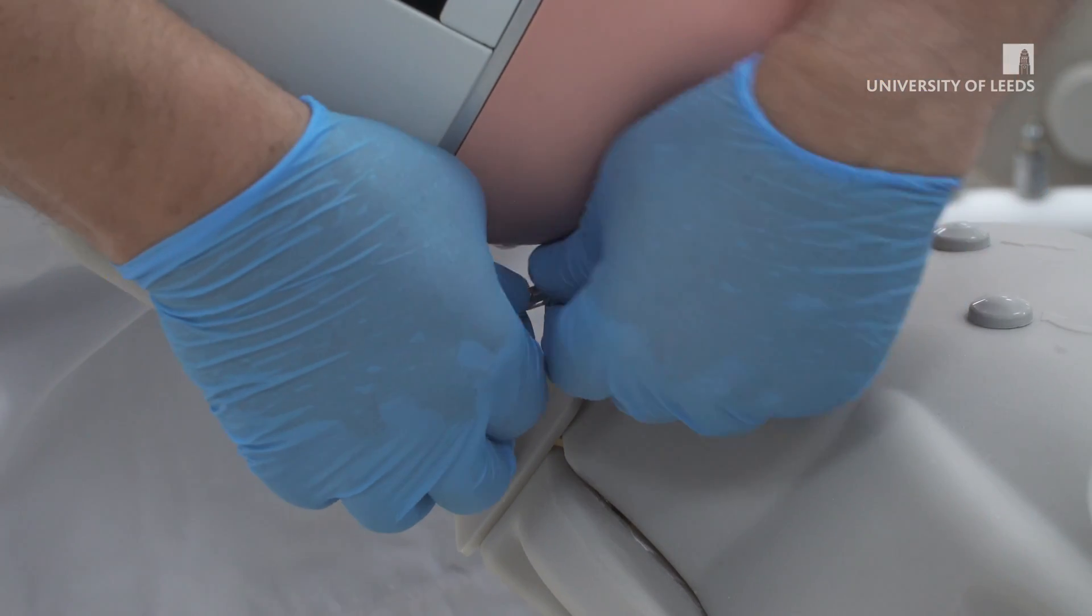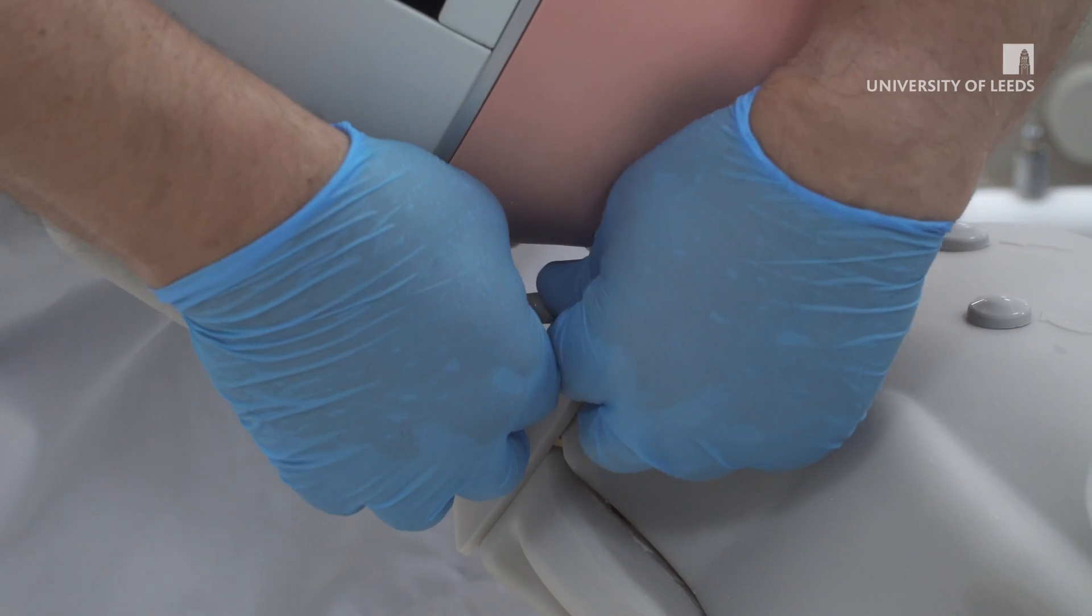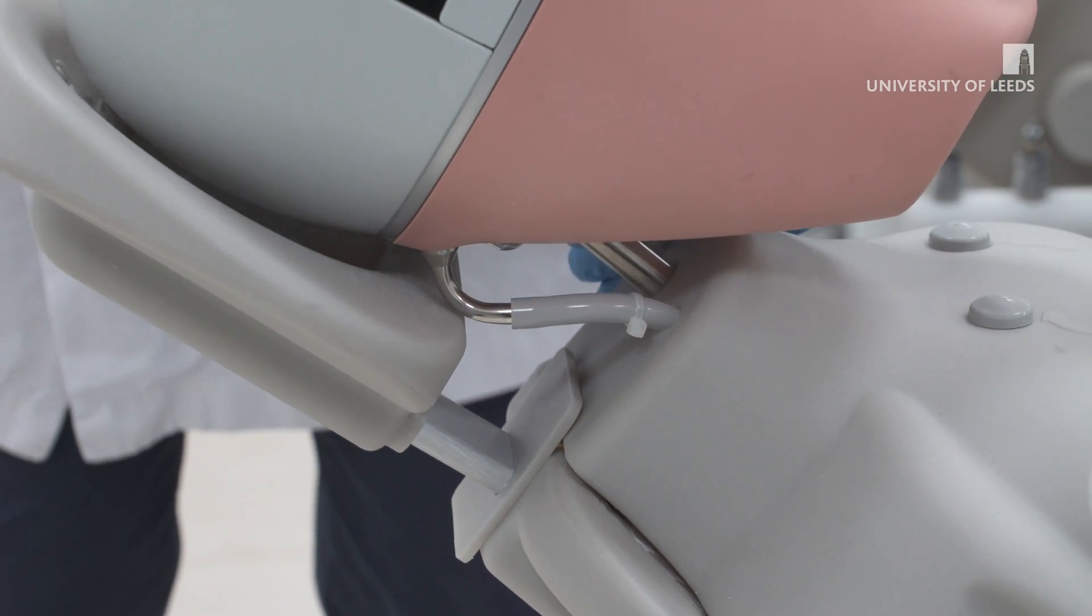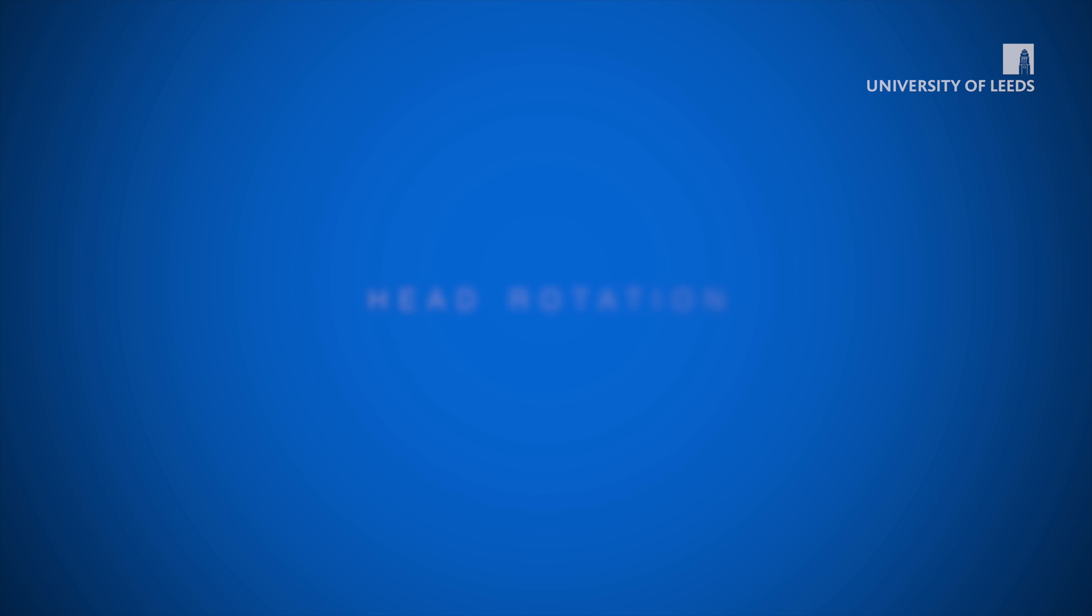Next, on both units, connect the two grey pipes that come out of the torso to the two silver head outlets as shown. When in position, you may want to rotate the head for easier access.